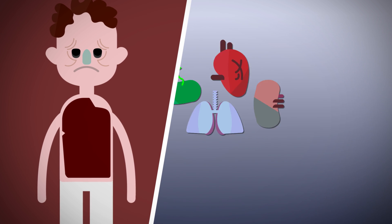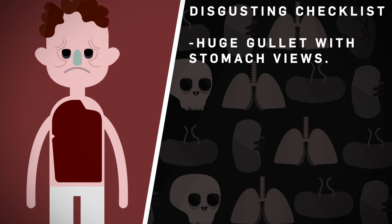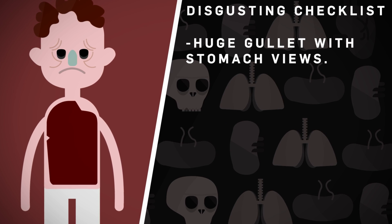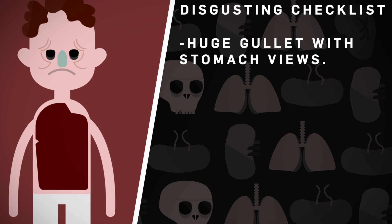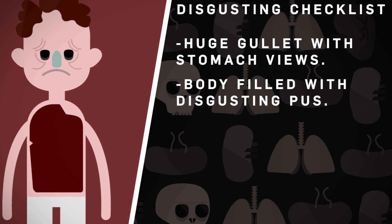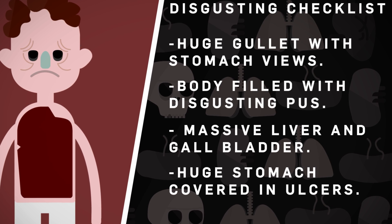When doctors finally felt brave enough to autopsy his foul-smelling corpse, they found that his gullet was abnormally wide and when his jaws were open, you could see straight down into his stomach. His body was found filled with pus. His liver and gallbladder were abnormally large, and his stomach was enormous and covered in ulcers.